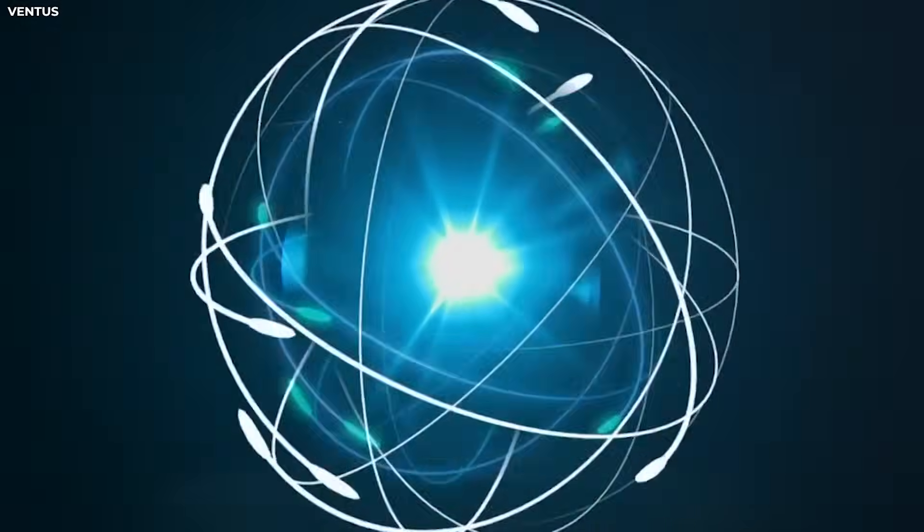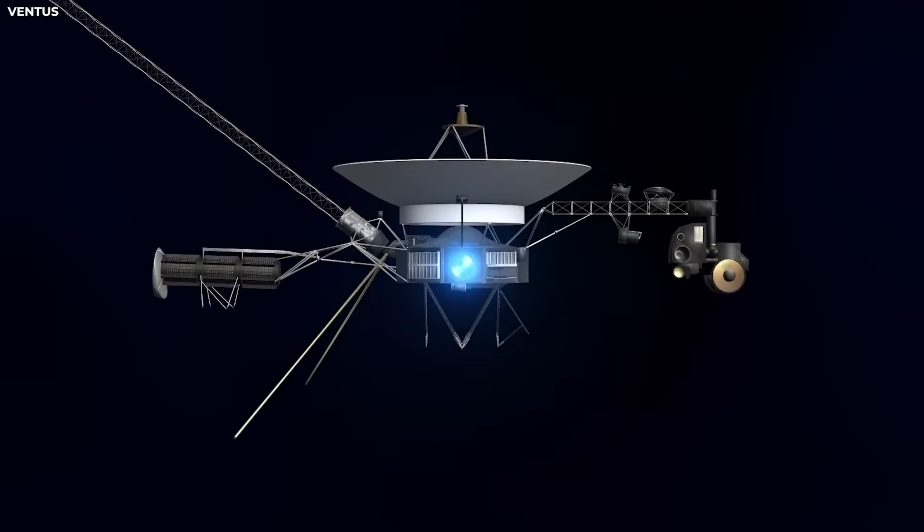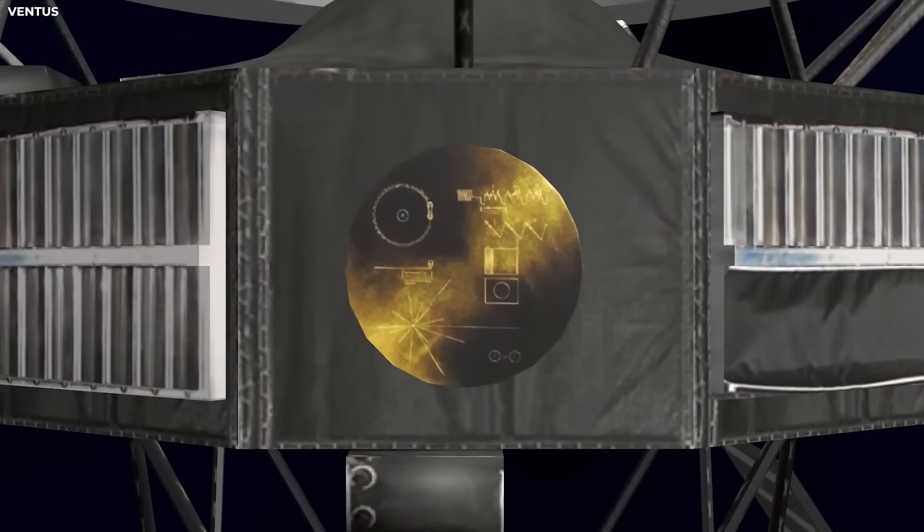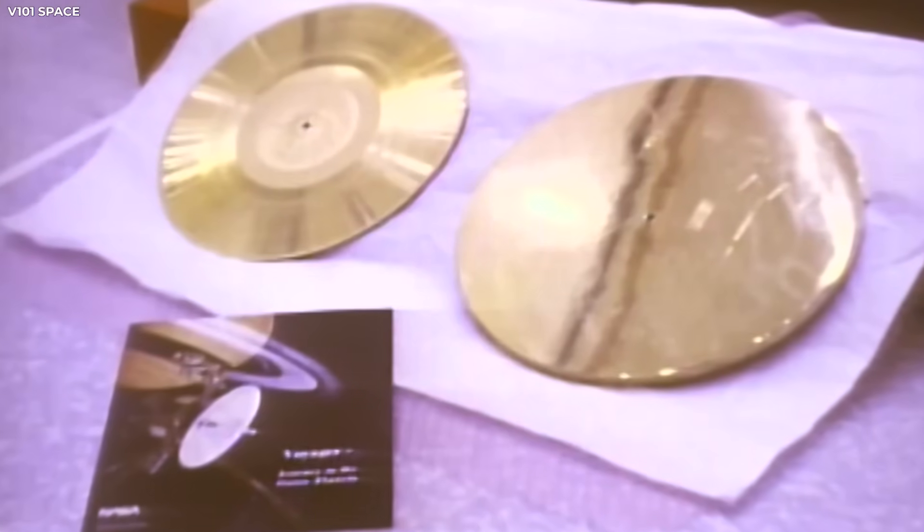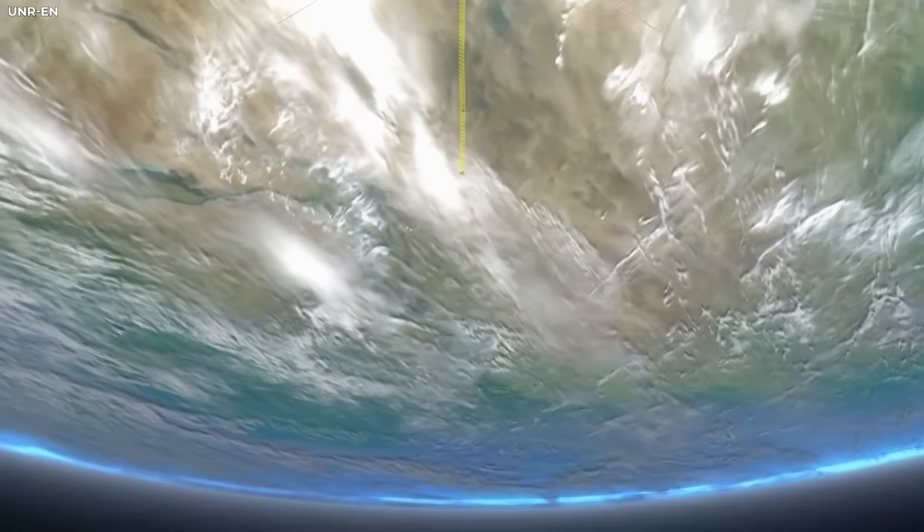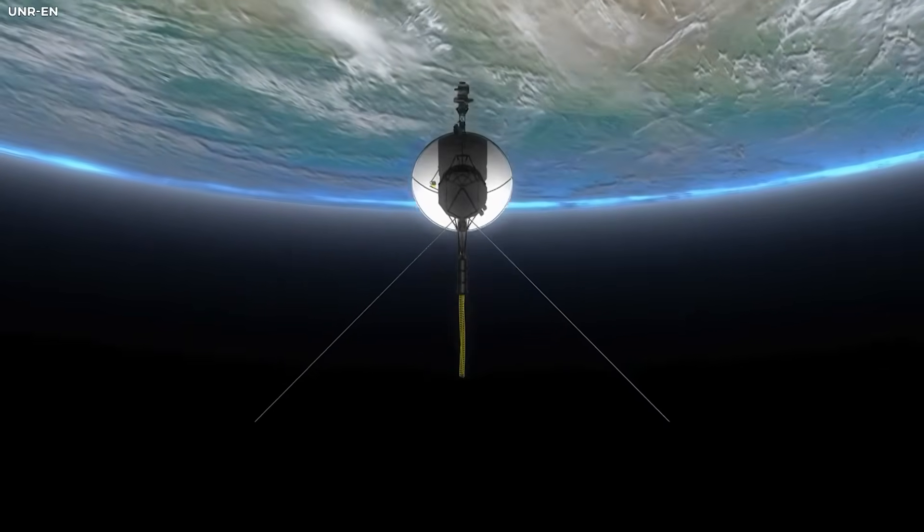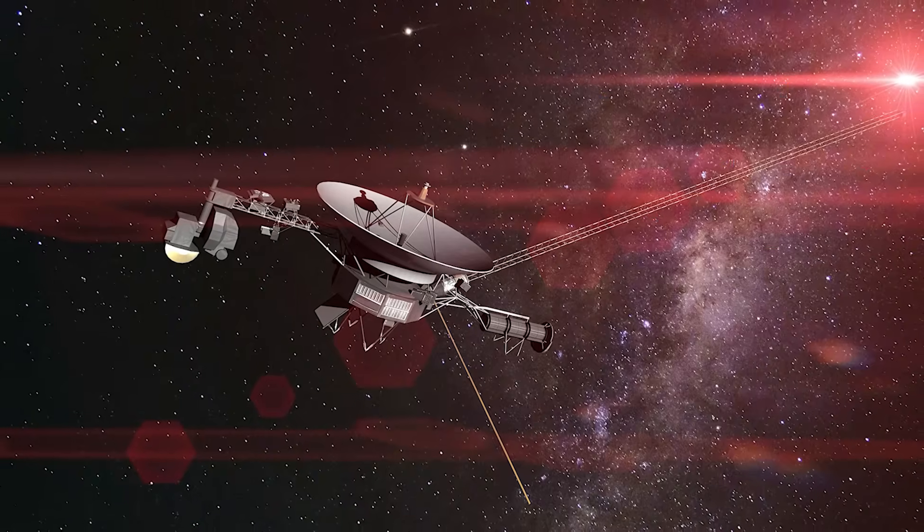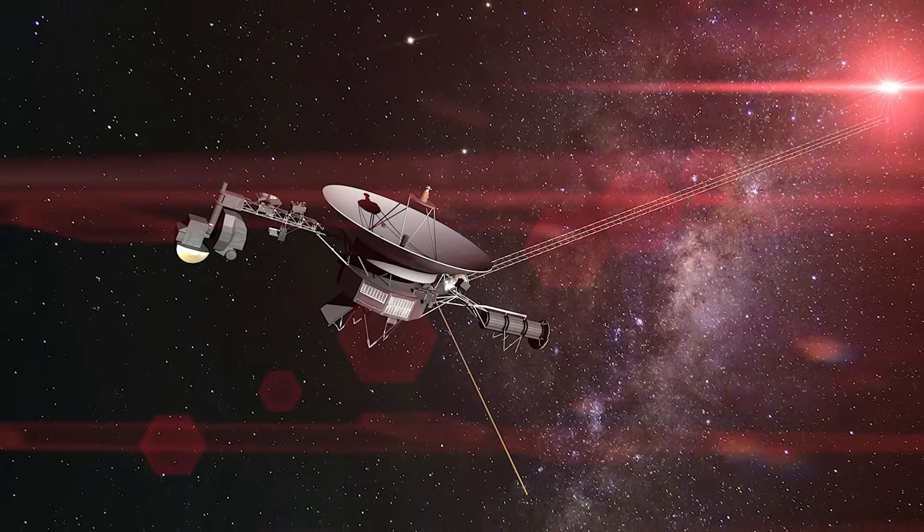One theory says the signal came from machines, not living creatures. These could be super smart computers left behind by ancient civilizations. Even if the creators are long gone, their machines might still be out there, drifting through space. Maybe one of them spotted Voyager 2 and decided to say hello.